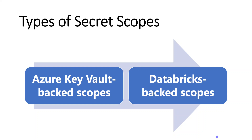The second type is Databricks Backed Scopes, which means Databricks itself maintains an encrypted database. Within that database, all secrets can be maintained. We don't need to create any external service for this option — the secret can be maintained within Databricks itself. But in today's video, we are going to talk more about Azure Key Vault Backed Scopes.